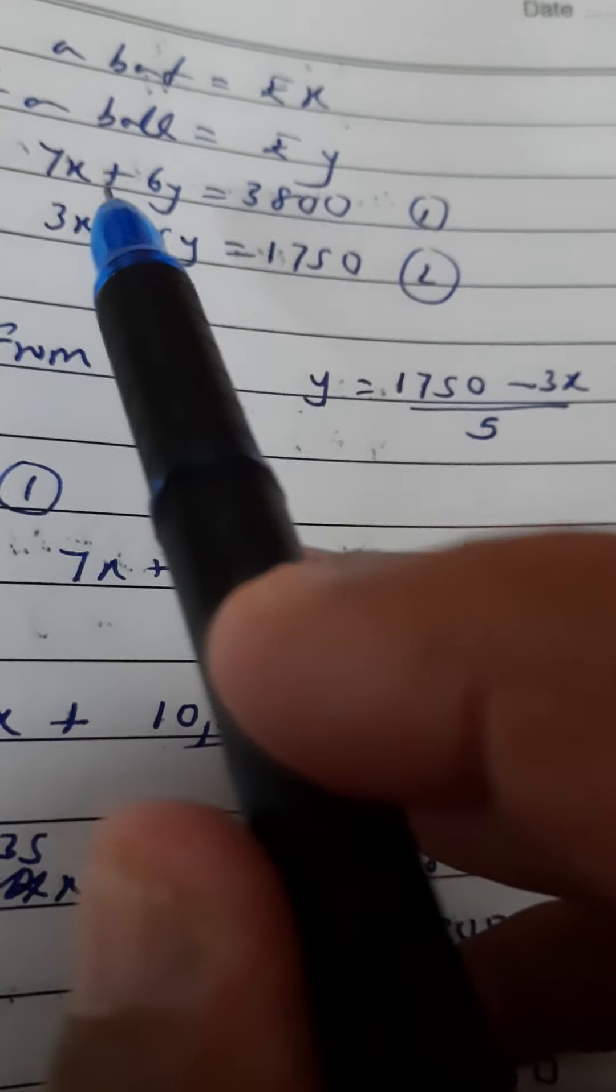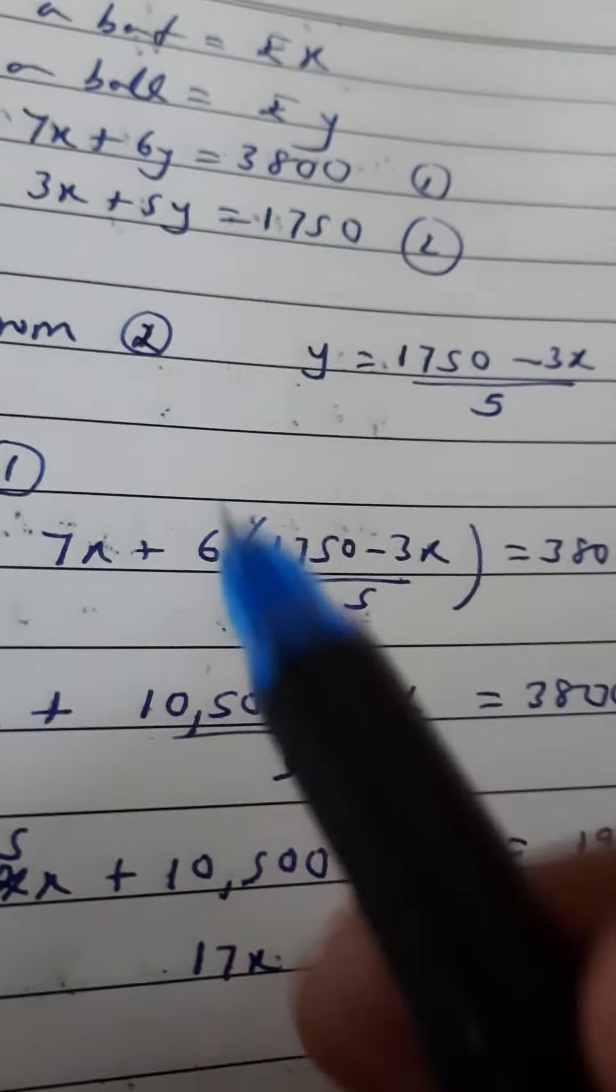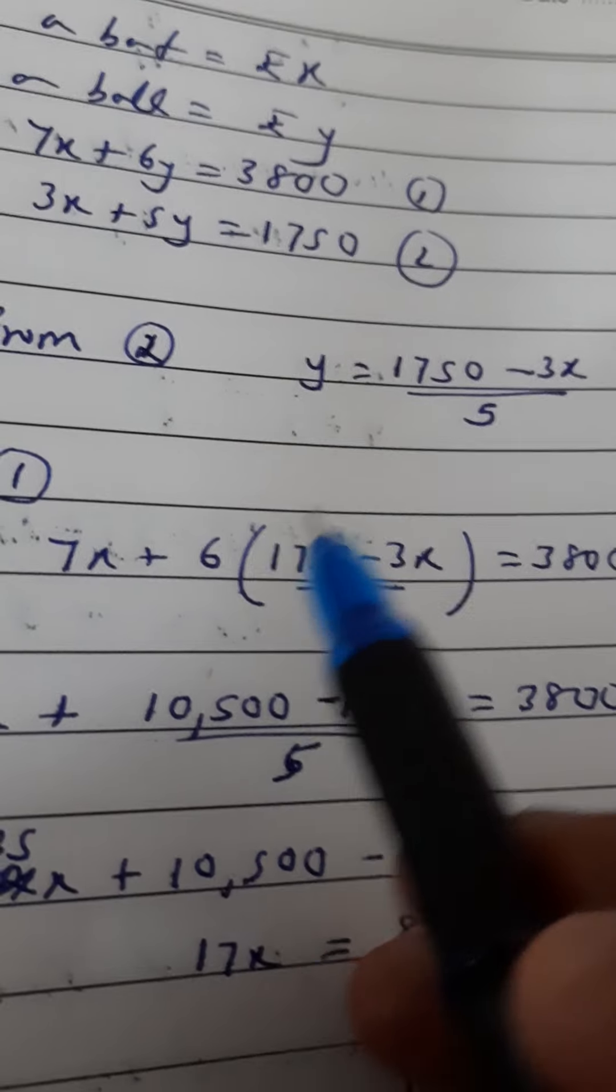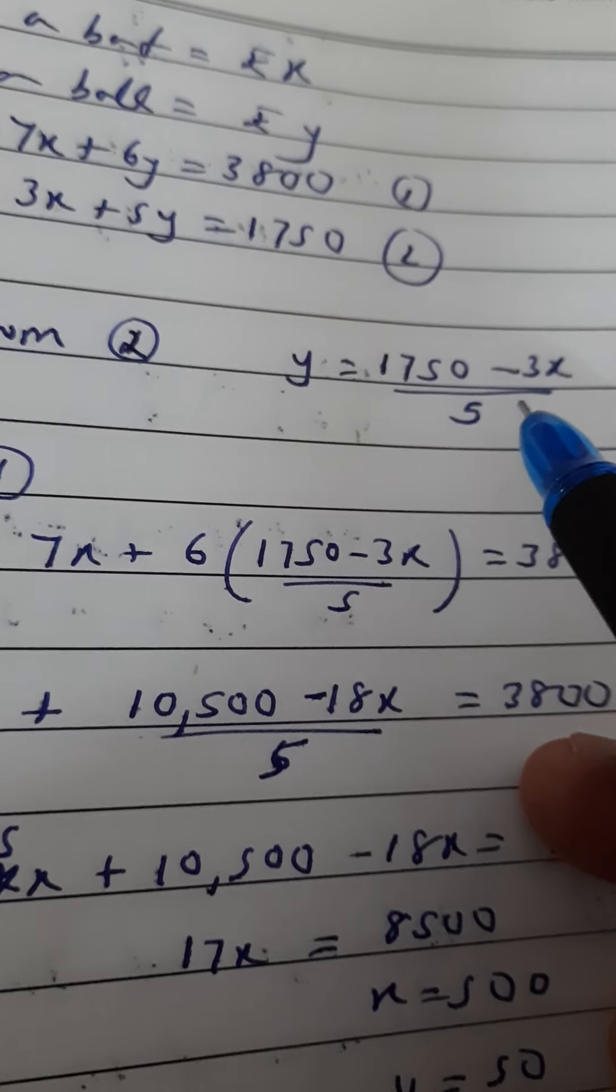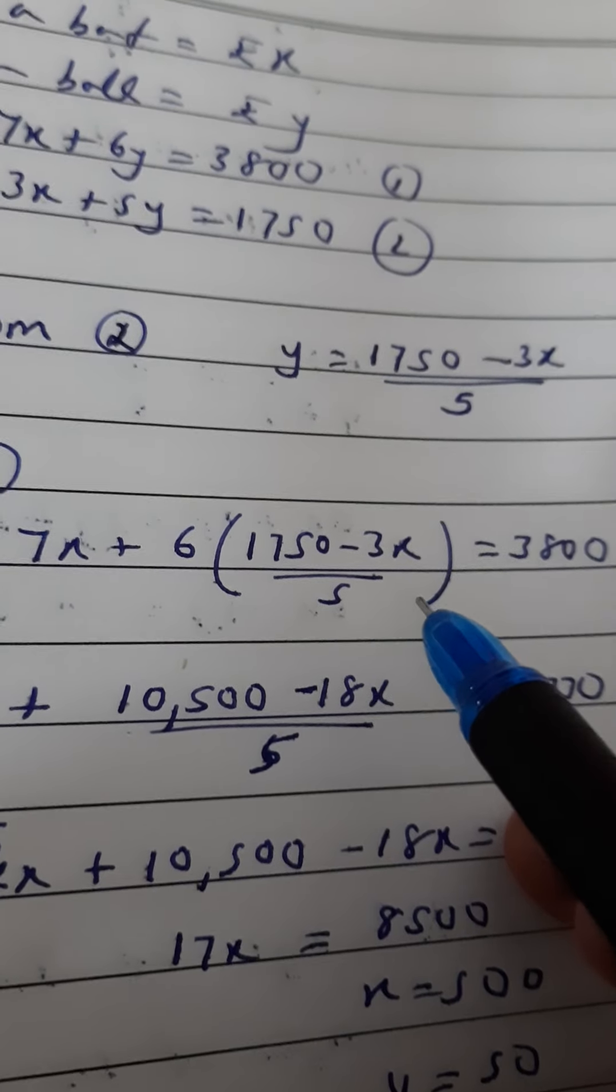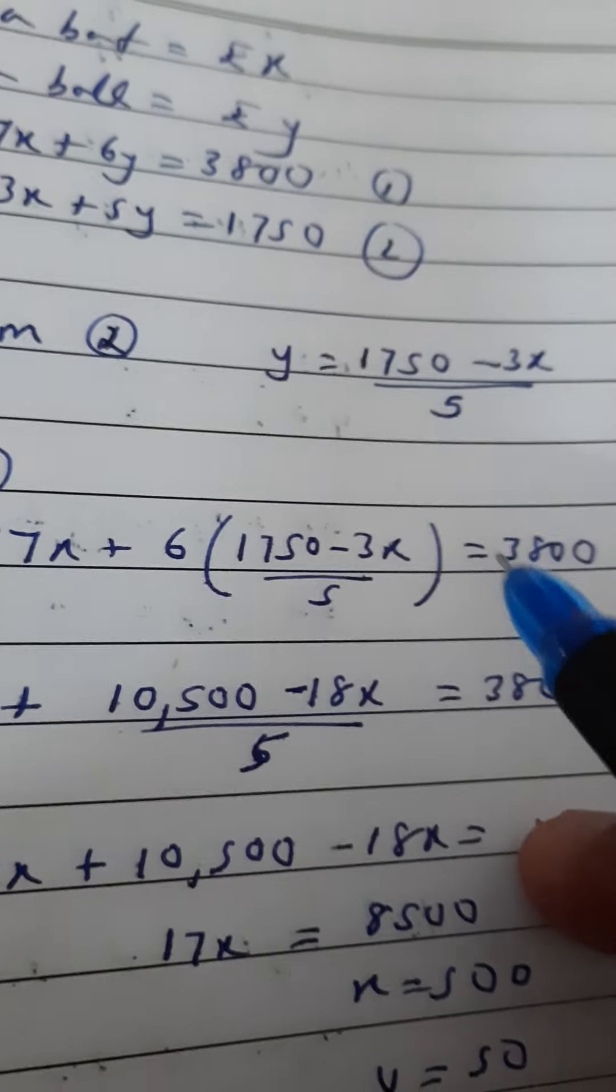Equation 1 is 7x plus 6y equals 3800. So 7x as it is, 6 into y. Now the value of y we have found: 1750 minus 3x divided by 5. That I am going to substitute here. Equals 3800 as it is.